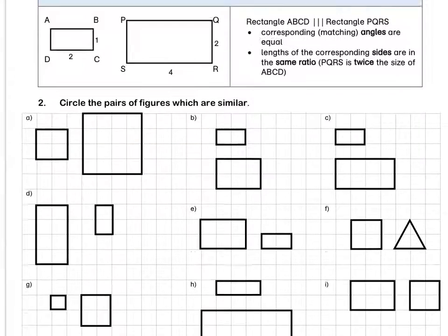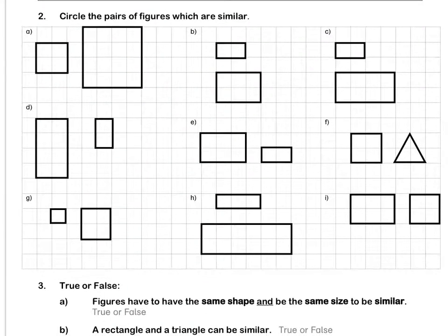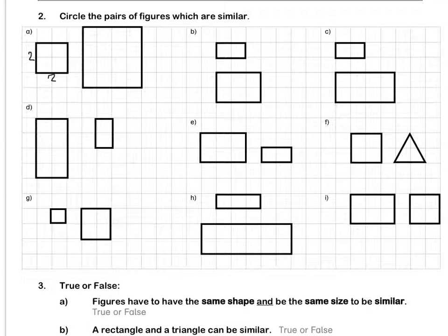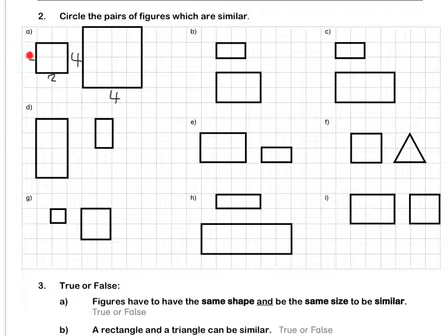Let's look at question two. We have two squares. The first square is two by two and the second square is four units by four units. These two figures are the exact same shape and their corresponding sides are in the same ratio. Therefore, these two figures are similar.